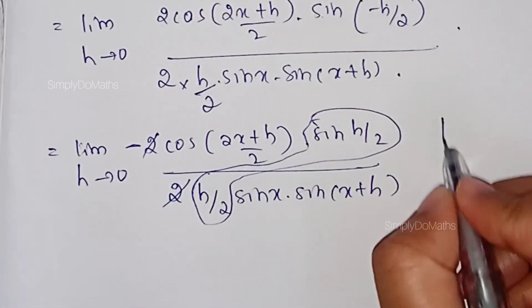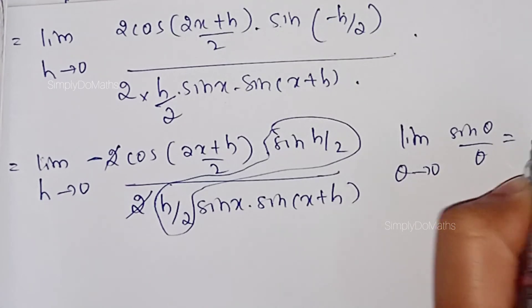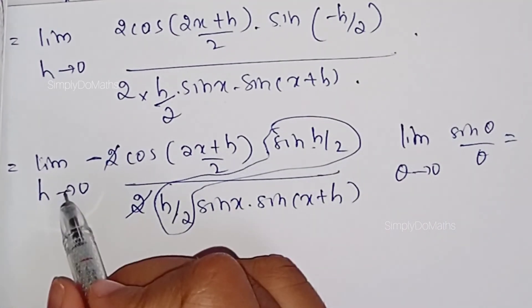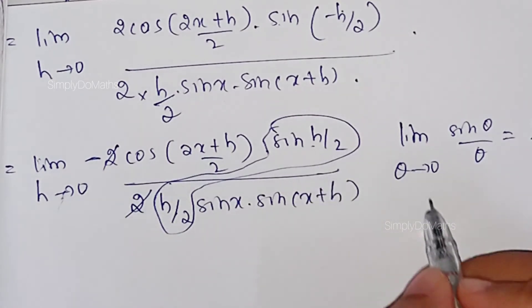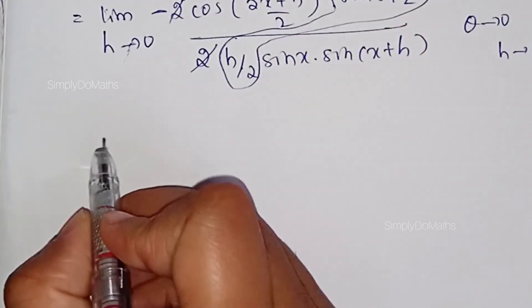We need to combine this with h tending to 0. Whenever h tends to 0, h/2 will also tend to 0. So the limit of sin(h/2)/(h/2) equals 1. Applying the limit: cos((2x+h)/2) as h→0 becomes cos(2x/2) = cos x, and sin(x+h) becomes sin x.